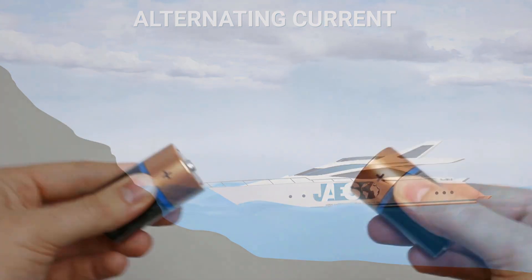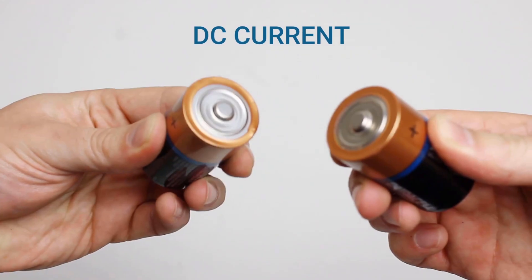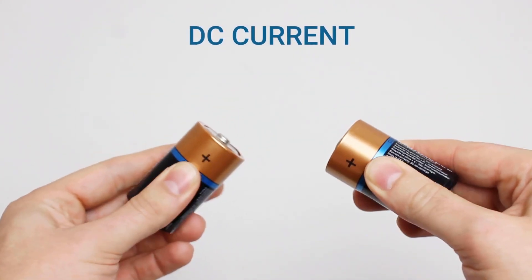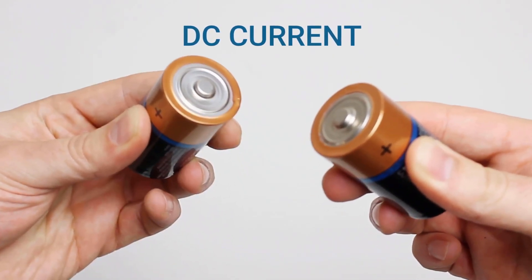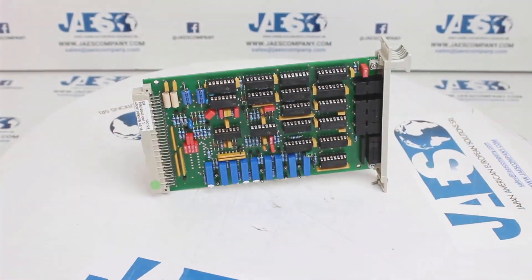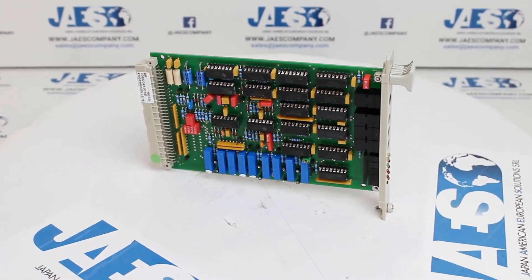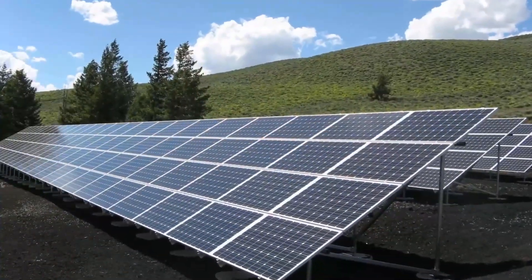The common batteries, on the other hand, provide continuous current and represent a typical example of direct current voltage generators. Their characteristic is a fixed polarity at the terminals called positive and negative poles. This type of current is mainly used by devices such as electronic boards and is also generated by solar panels.